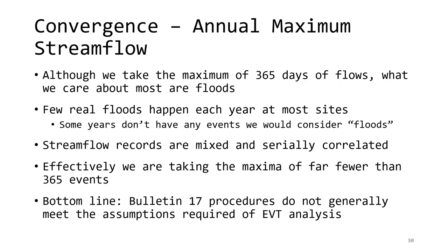In hydrology, we work with annual maximum streamflow all the time. The annual maximum is the largest instantaneous flow out of 365 days of flow observations. However, not every day is a flood event, and there may only be a few events we think of as floods for a given site. Streamflow also suffers from records mixed with flows caused by a variety of mechanisms and serial correlation, meaning observations are related in time, making it hard to get independent and identically distributed samples. Bulletin 17 procedures are built to deal with some of these issues. Log Pearson type 3 can be an excellent model for daily streamflow, and may work well for annual maximum streamflow even though theory suggests the result should be GEV instead.